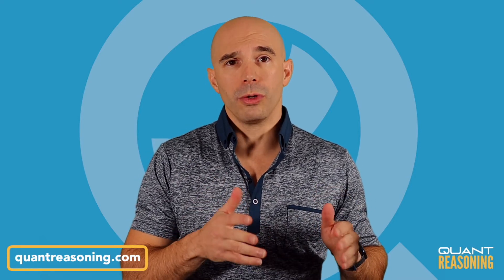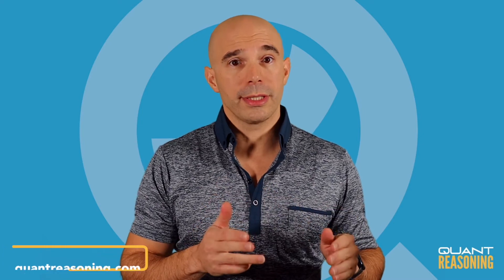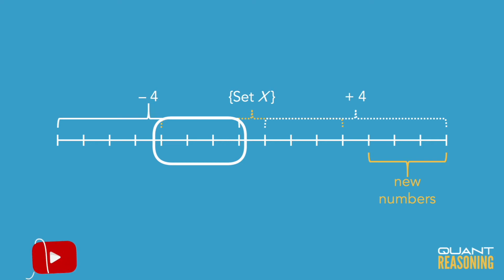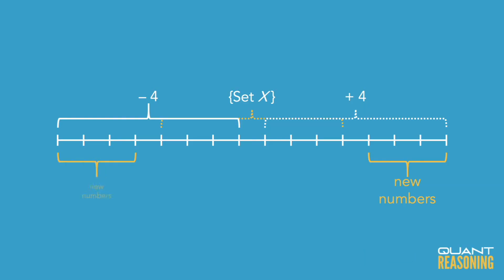Exactly the same thing will happen on the other side of the set when we subtract four from every number in the original set. The largest four numbers will just generate the lower four numbers in the original set when we subtract four from each one, but we will generate four new numbers to the left of the set — the four lower numbers in the original set will generate four new lower numbers when we subtract four from each one.